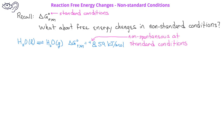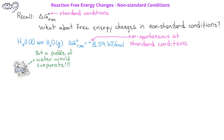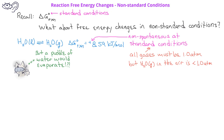However, compare this to your experience of a puddle of water evaporating. How can this puddle of water evaporate if the standard free energy change for this process is positive, indicating it's a non-spontaneous process? You should recall that standard conditions require all gases to be at one atmosphere pressure. However, for a puddle of water on the floor, the pressure of the water vapor above the puddle is much less than one atmosphere. In order to understand why this water spontaneously evaporates, we need to understand the free energy changes under non-standard conditions.